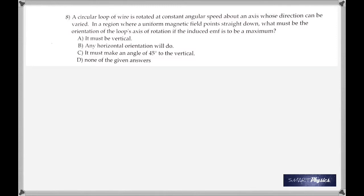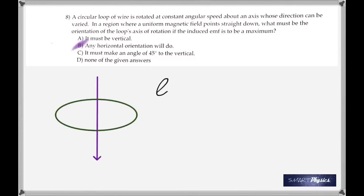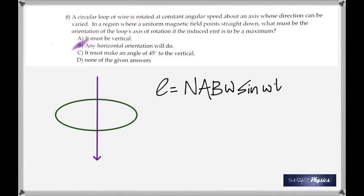A circular loop of wire is rotated at constant angular speed about an axis whose direction can be varied, in a region where a uniform magnetic field points straight down. What must be the orientation of the loop's axis of rotation if the induced EMF is to be a maximum? The induced EMF is given by the formula NABω sin(ωt).